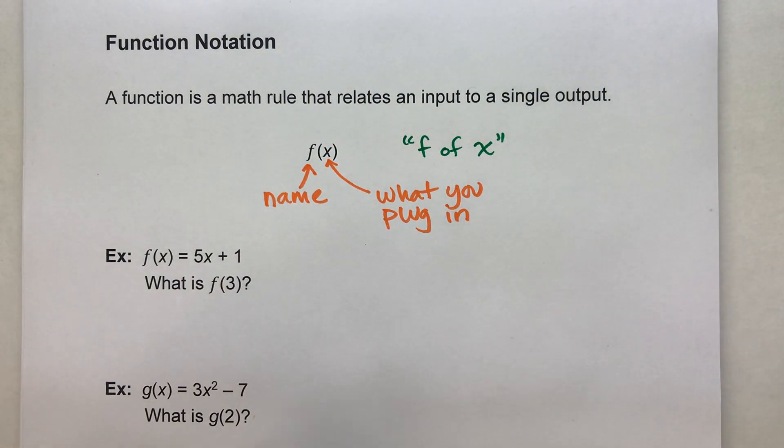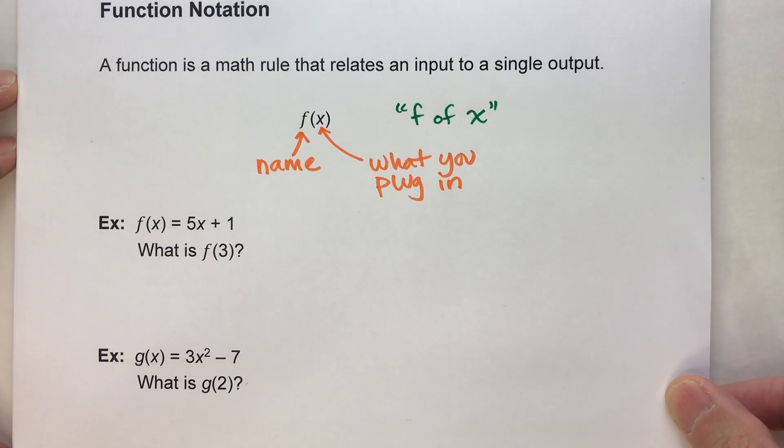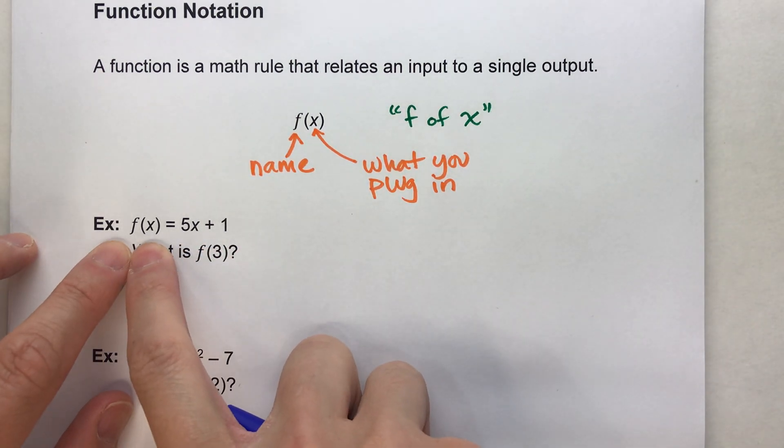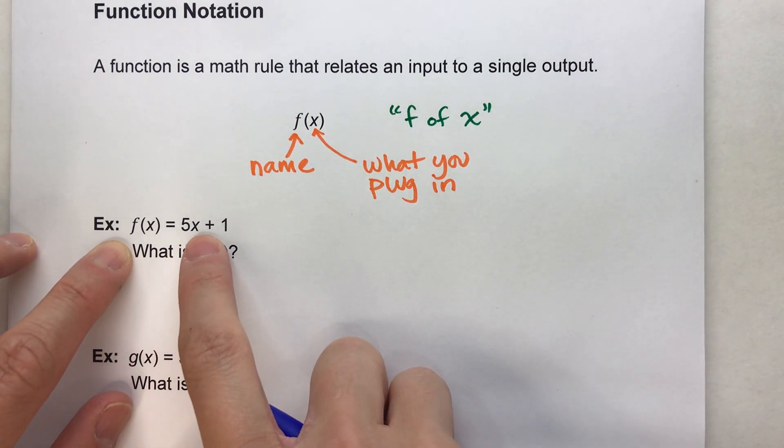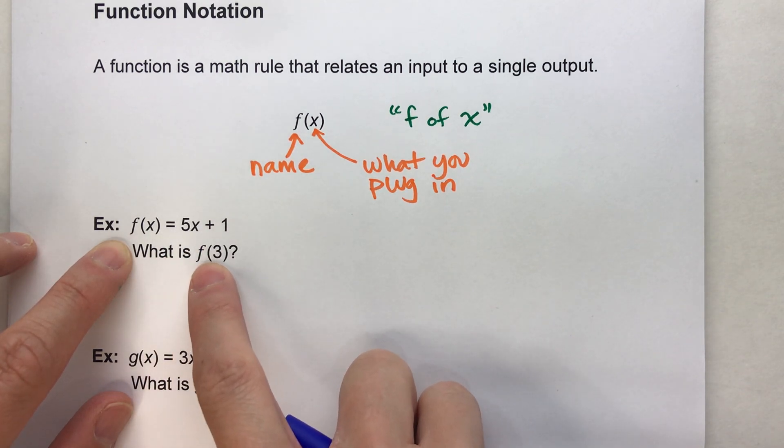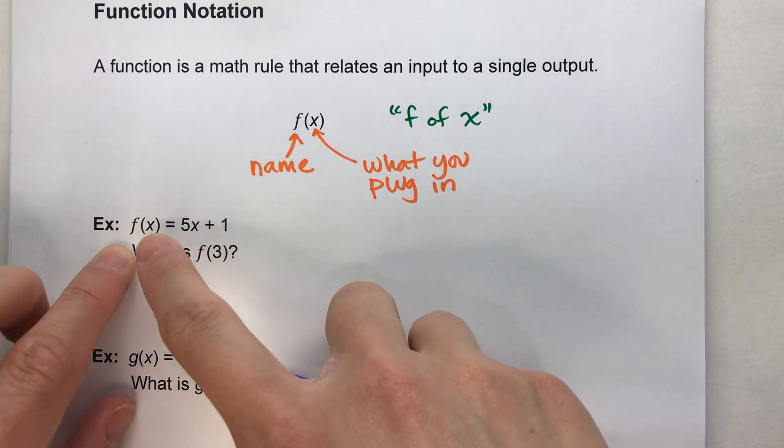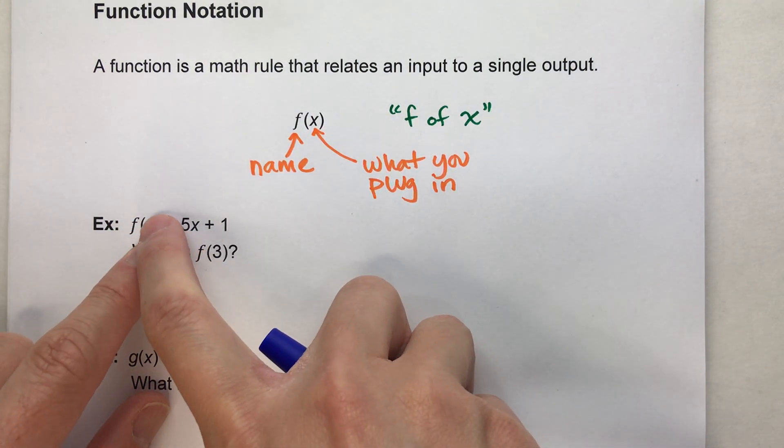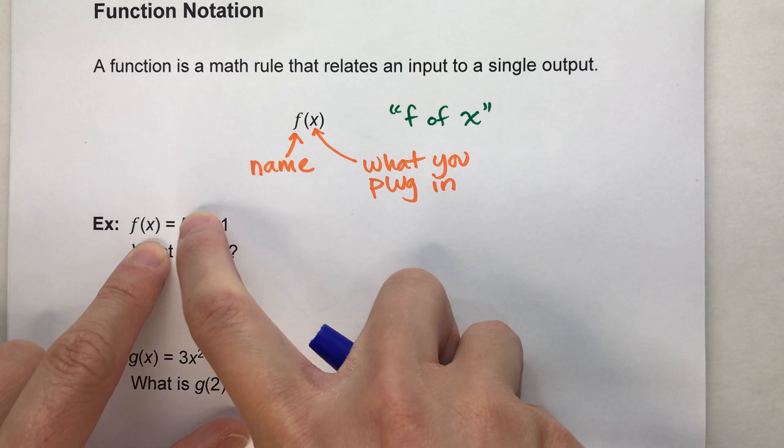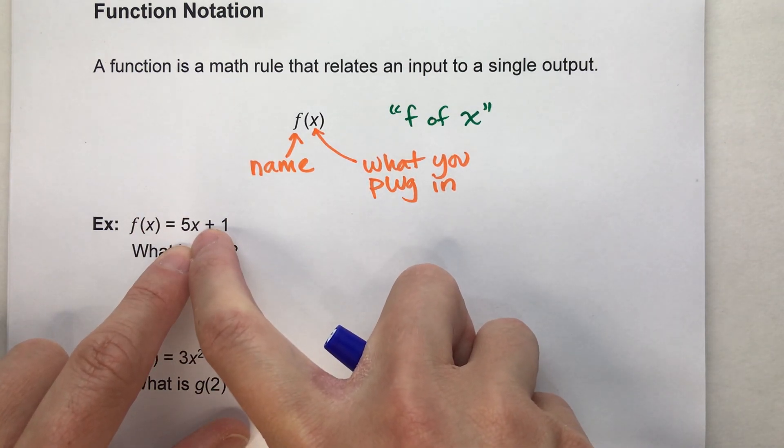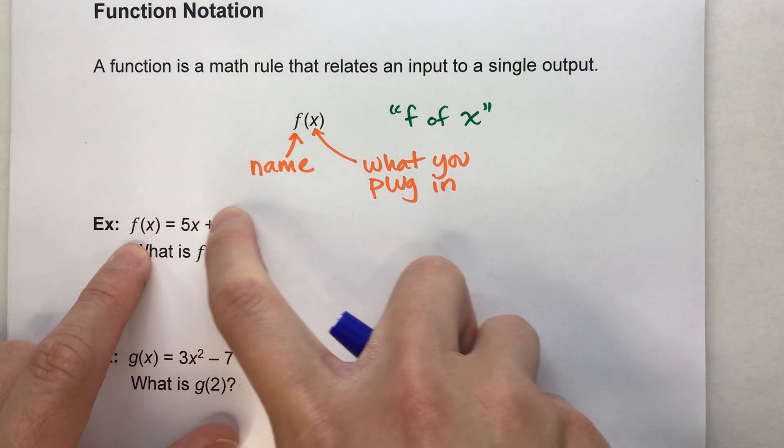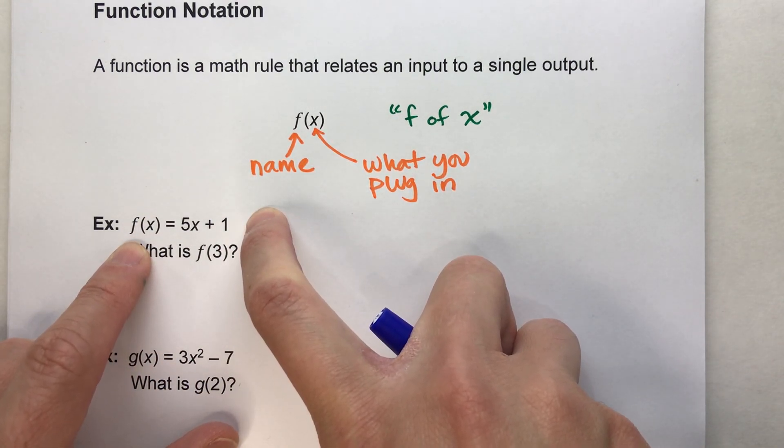And the best way to understand function notation is to actually do some problems with it. So I've got a couple of examples here so we can see. Example, f of x equals 5x plus 1. What is f of 3? Alright, so first off, let's understand this, f of x. So we've got a function rule called f and we put x into it and the rule is 5 times whatever x is plus 1 equals our answer, our output.